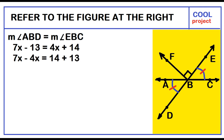Simplify using the properties of equality. 7x minus 4x equals 14 plus 13. 7x minus 4x equals 3x. 14 plus 13 is 27. Divide both sides by 3.